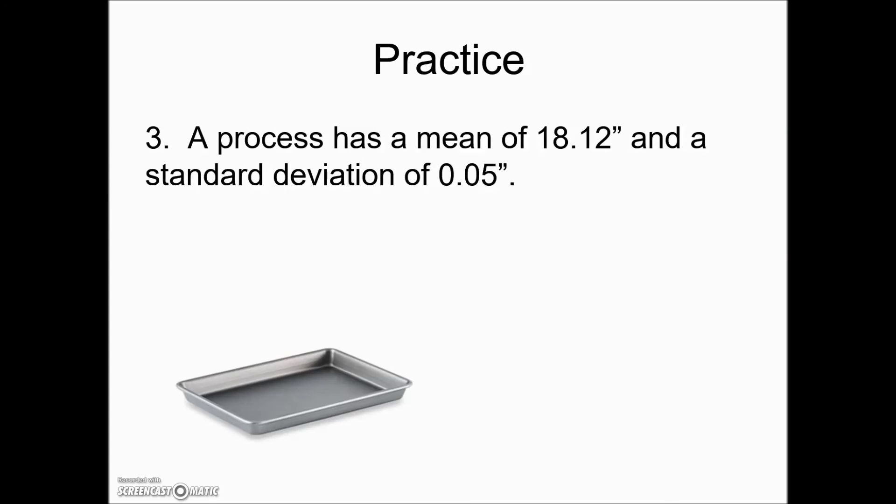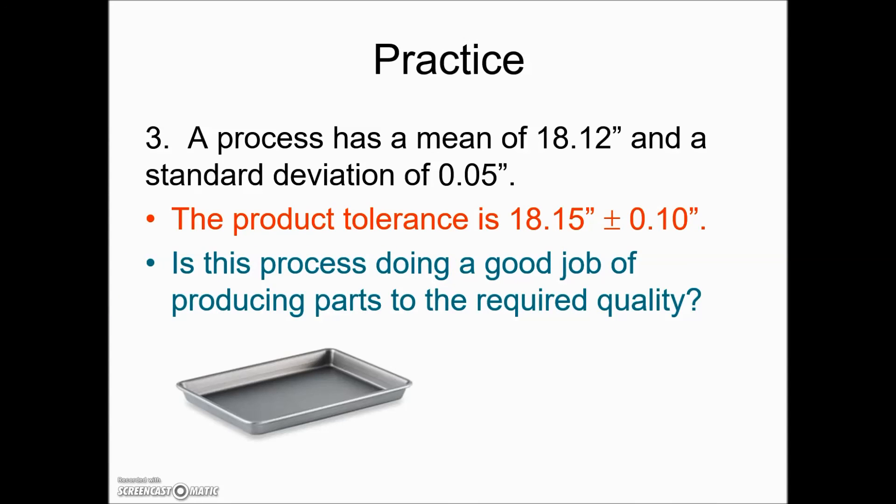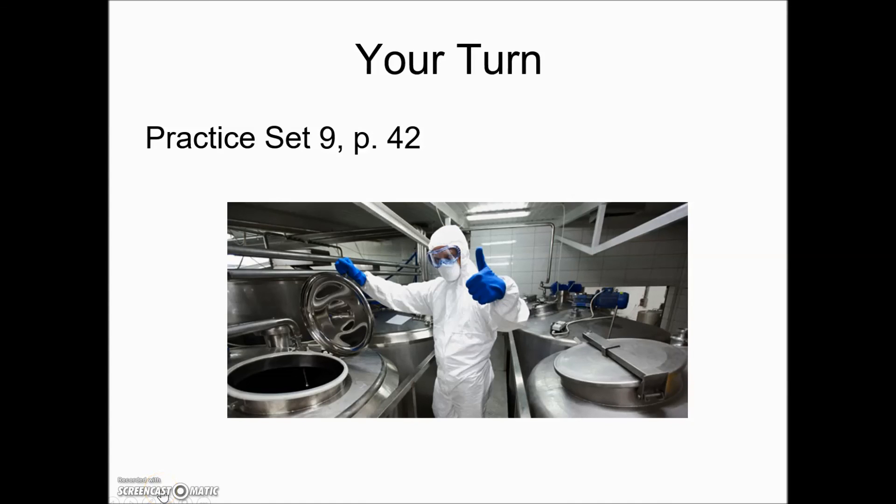In this third example, a process has a mean of 18.12 inches and a standard deviation of 0.05. The product tolerance is given as ideally 18.15 inches plus or minus 0.1 inches, and the question is are they doing okay? We need to find the upper and lower control limits to find out where 99.7% of the process is actually producing, and then compare it to the maximum and the minimum values. Here we have the graphs of those and we can see we're making values that are smaller than they should and values that are larger than they should. Additional practice can be found on page 42.